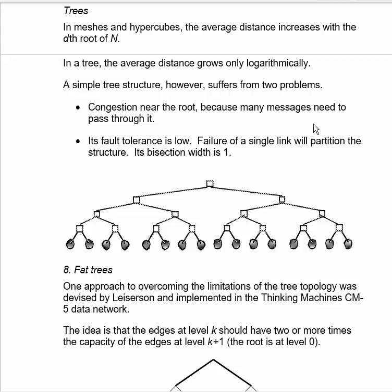But if we use a naive tree structure, we have two really serious problems. The first one is congestion, because so many messages, if they're going from one half of the tree to the other, have to go over links near the top of the tree, like these two are the worst. All of the messages from the left half to the right half have to traverse them.